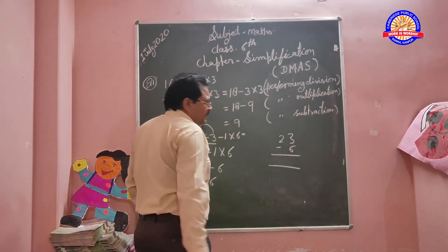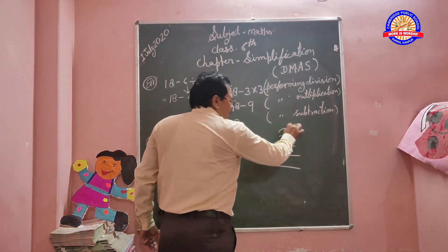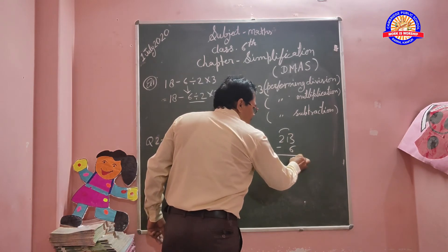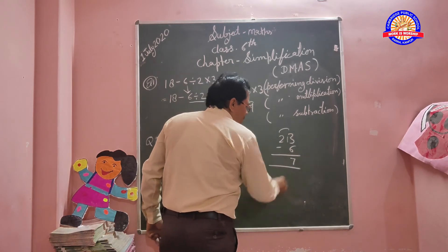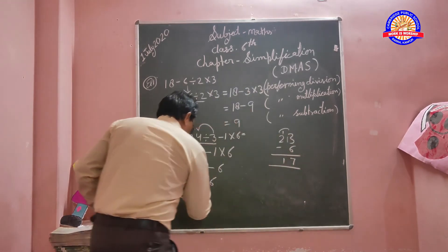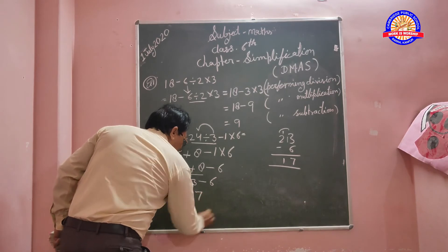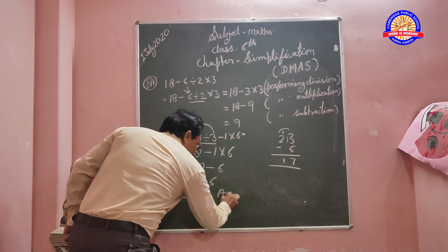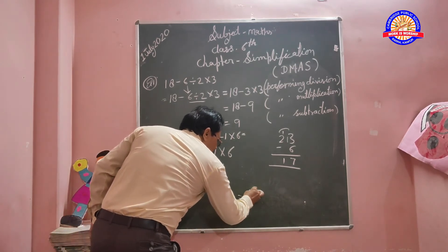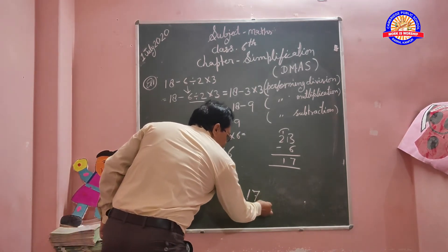Then 13 plus 7 equals 17. The answer equals 17.